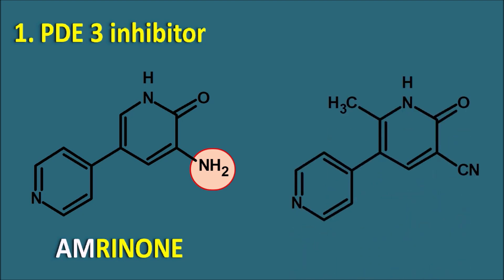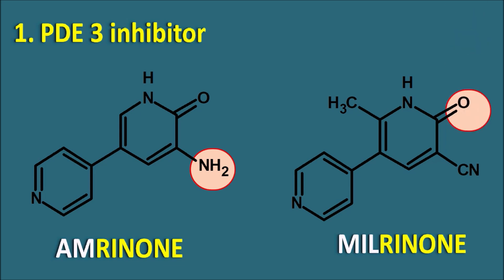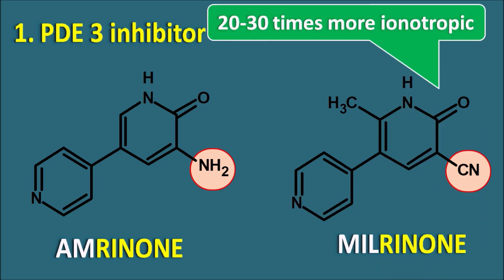The second one is milrinone. Milrinone has a nitrile group at this position, so it is a nitrile-containing bipyridine. Both drugs act as cardiotonics. Compared with amrinone, milrinone is 20 to 30 times more active in inotropic activity. These two drugs are inotropic agents particularly used in the treatment of congestive heart failure.